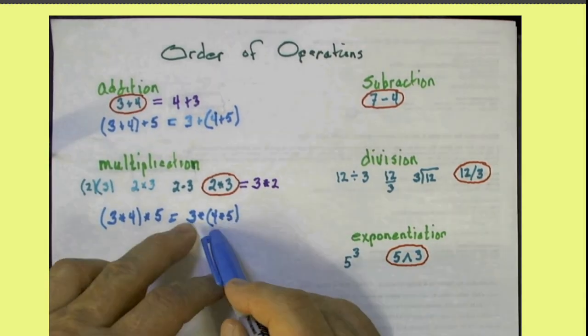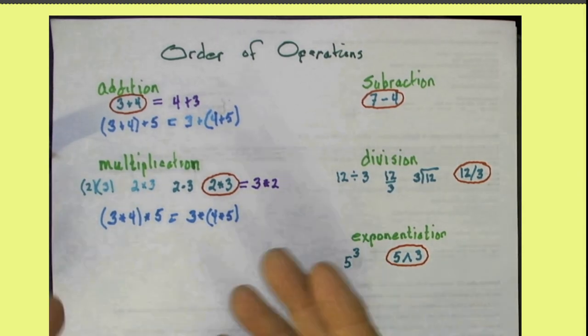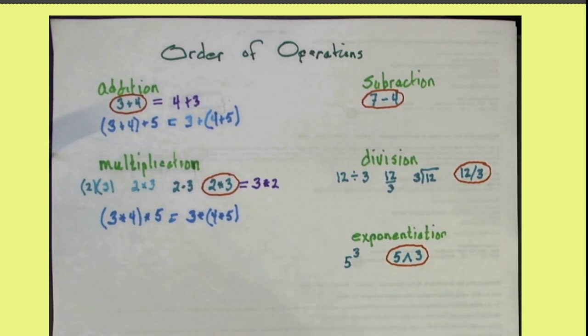But once you start combining addition and multiplication and subtraction and division and exponentiation, then the order matters a great deal, because the order that the operations are done produce a different result.